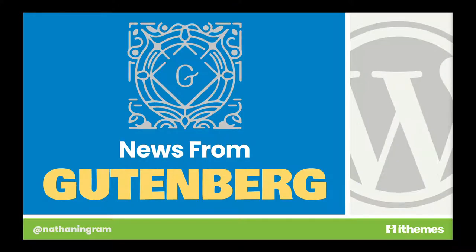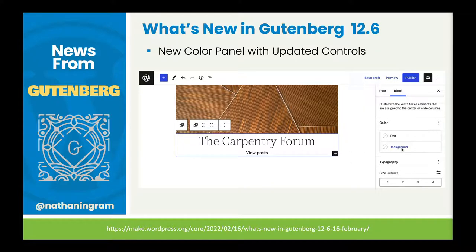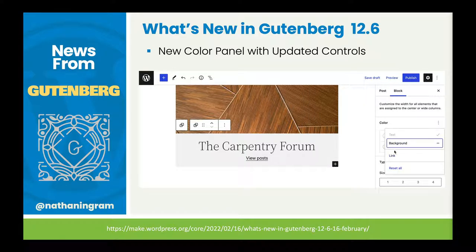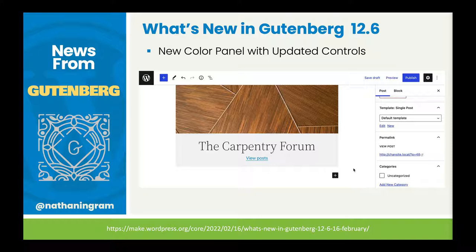Let's move into news from Gutenberg. Gutenberg 12.6 was released on February the 16th with a few feature enhancements: a new color panel with updated controls, a post-author bio and read more block, and polishing of loading states. More accessibility improvements are constantly happening, along with other smaller features and bug fixes. The new color panel is pretty cool — you can now select link colors in the sidebar, and it actually changes the color of links in that block. It's a really easy-to-use UI now built into Gutenberg.